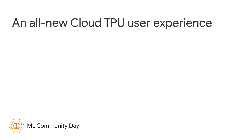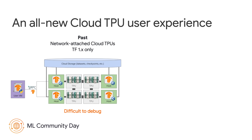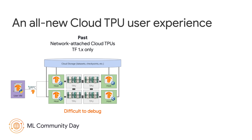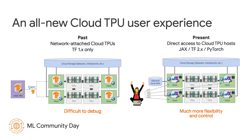Another major feature of Cloud TPUs that makes the user experience incredibly smooth is the new TPU VM experience. In the past, for using TPUs on cloud, a network-attached architecture was used. The user would connect to a VM and then interact with the TPUs through gRPC calls. This was difficult to debug and sometimes introduced delays in the experience. With the all-new TPU VM architecture, you have root access to every TPU VM you create, so you can install and run any code you wish in a tight loop with your TPU accelerators.